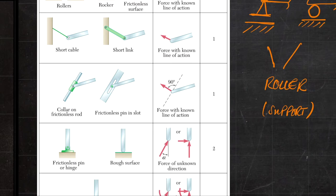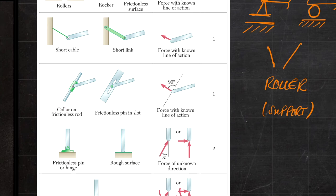You also have collars — moving members on a rod or lever, usually frictionless. They only apply a force normal to that member, so the force component along the rod itself is zero.